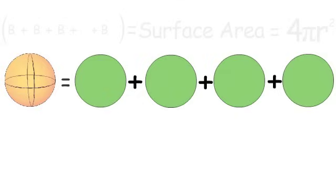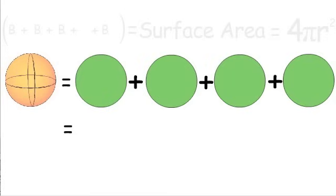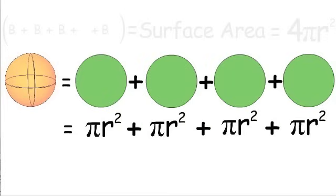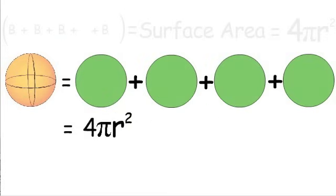The area of each circle is pi r squared. Combine them together and we get 4 pi r squared.